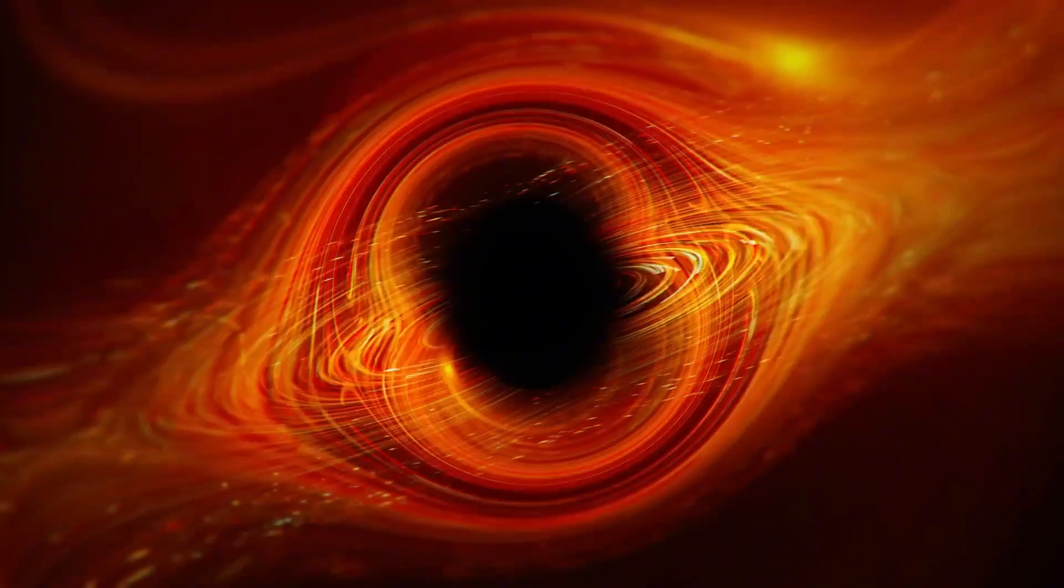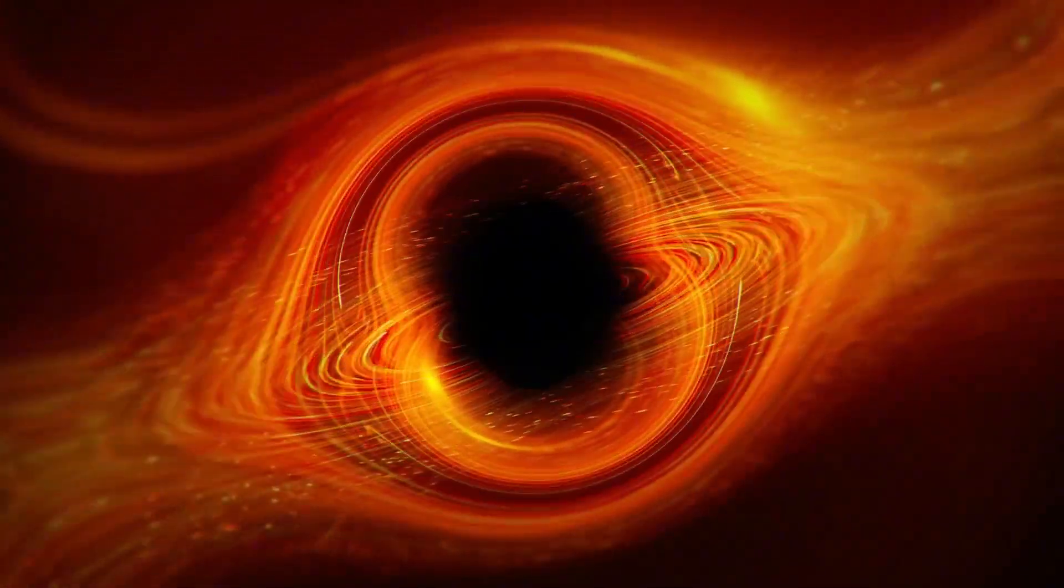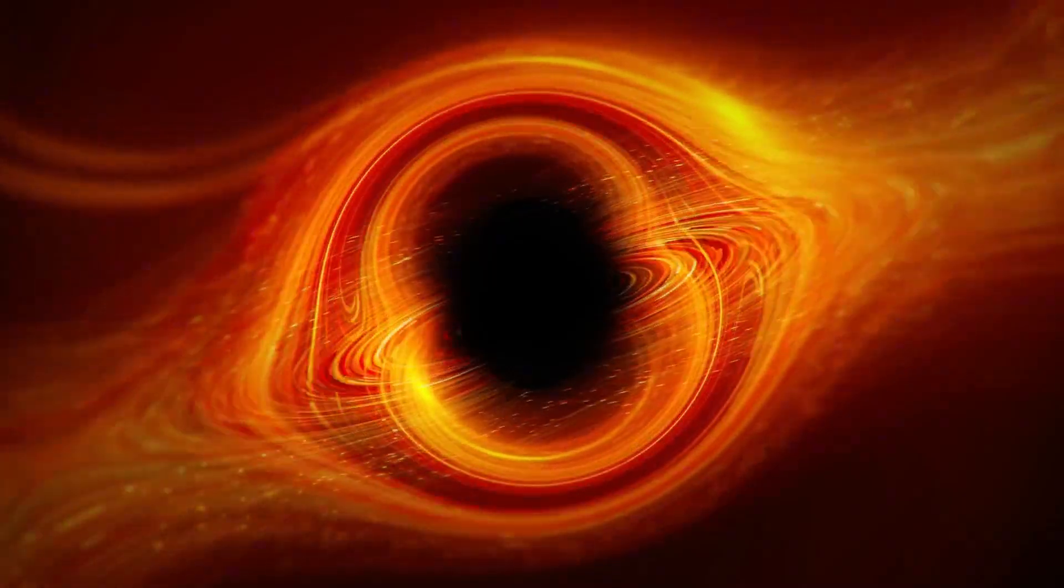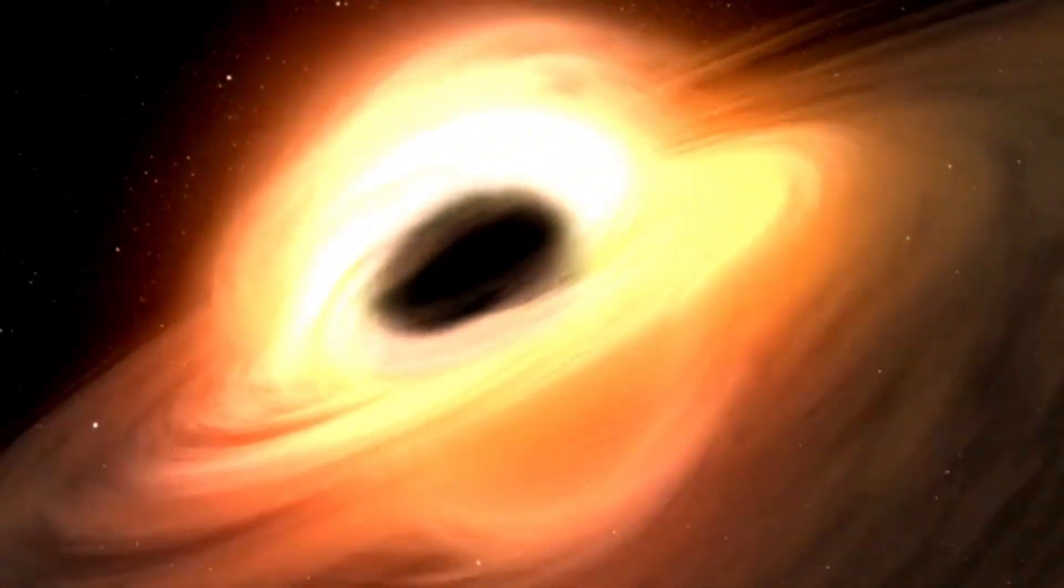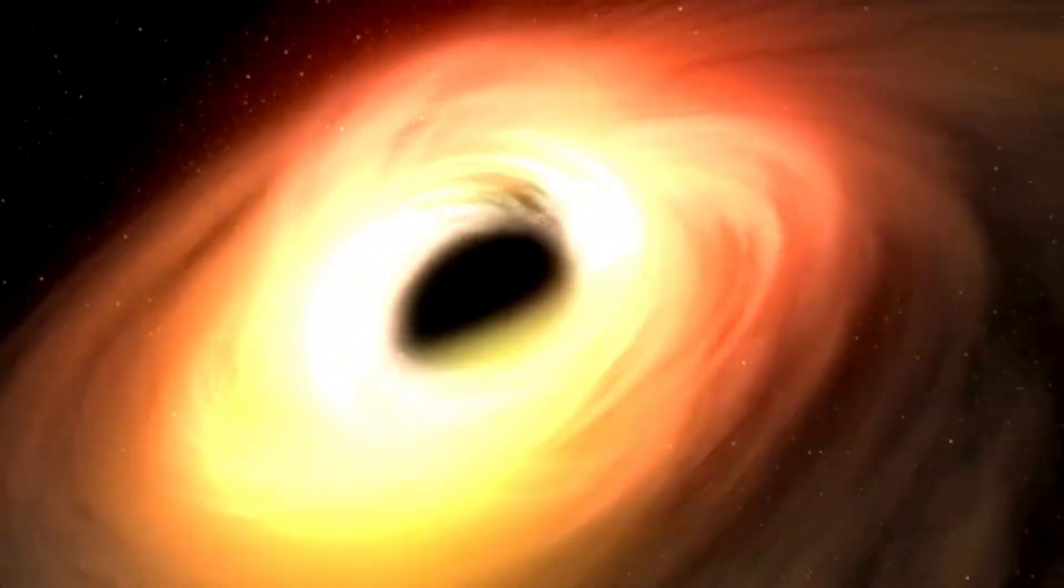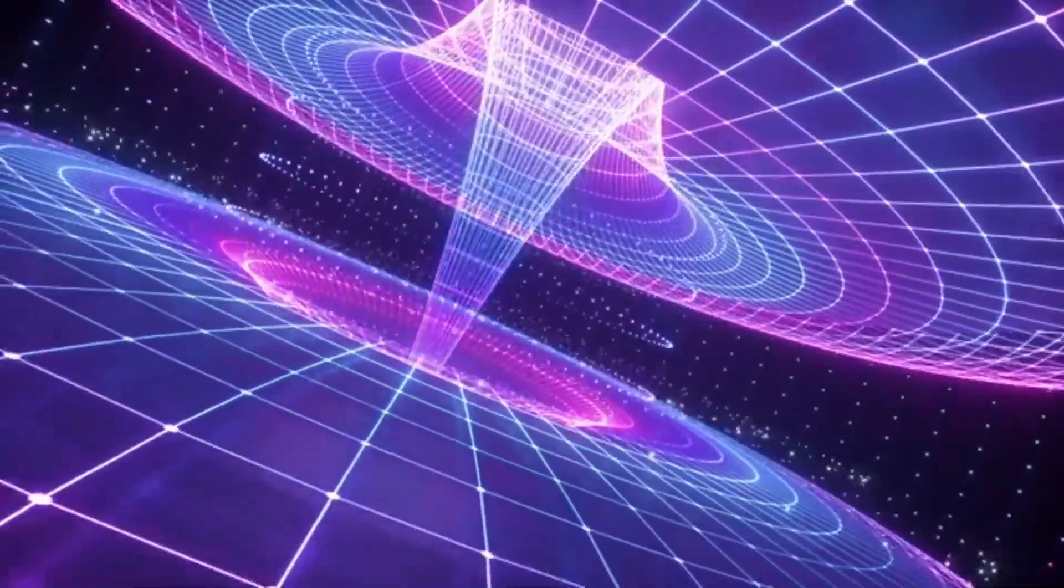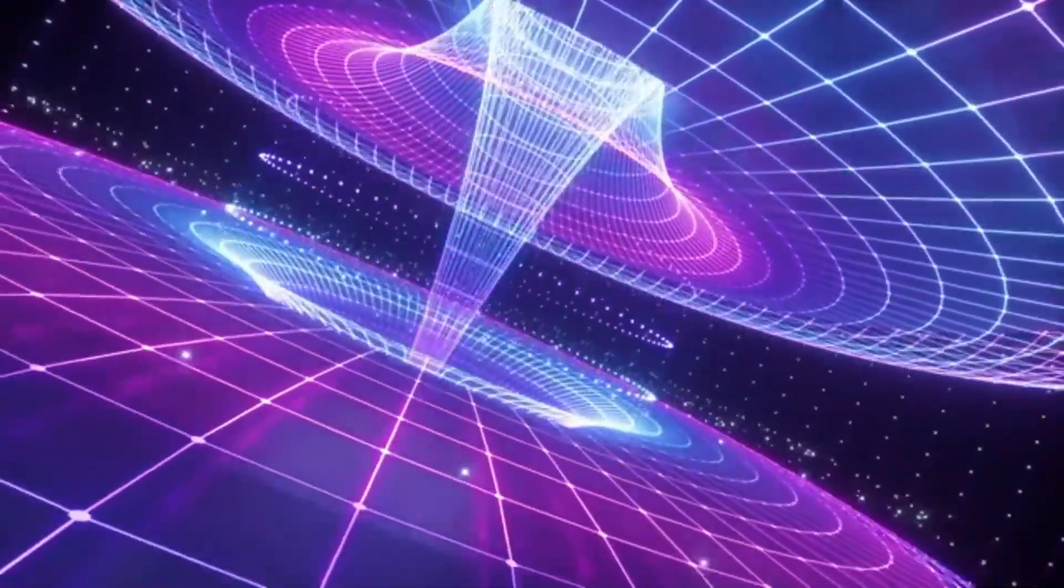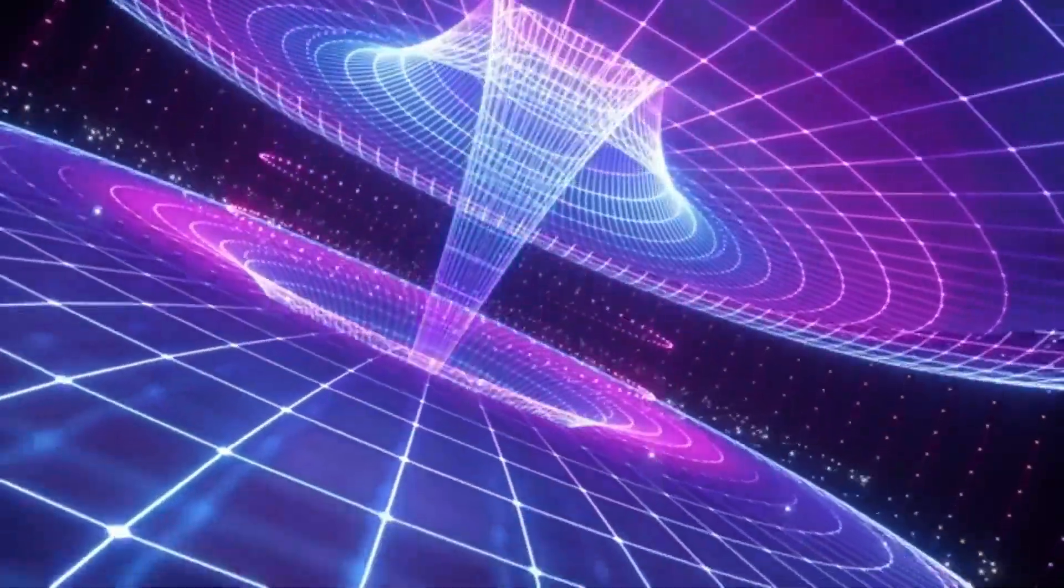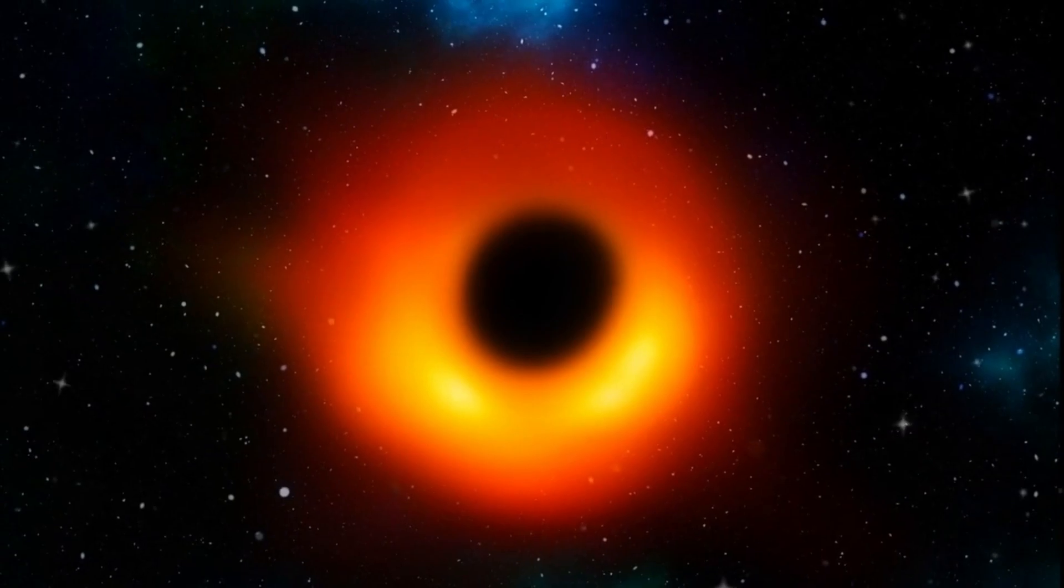Scientists have been fascinated by black holes for centuries, ever since they pondered objects in space so massive and dense that they could trap light. The most famous ideas about black holes were predicted by Einstein's theory of general relativity. Essentially, when a massive star dies, it leaves behind a tiny, dense core. If this core's mass is more than three times that of the sun, gravity overwhelms everything else, leading to the formation of a black hole.